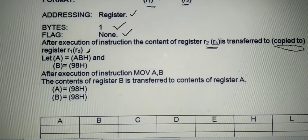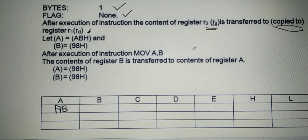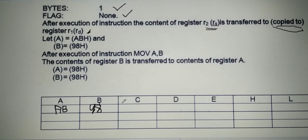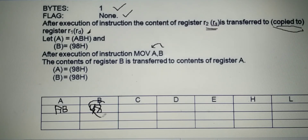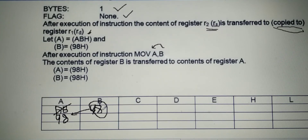Take one example. Let A be having the number ABH — that means the accumulator already contains the value AB. A two-digit number can be stored in any general purpose register. And B is having the number 98. After execution of the instruction MOV B to A, the contents of register B are copied to register A. Whatever number was in the accumulator gets erased and the new number is overwritten. In the accumulator, the number becomes 98 — both B and A now have 98.